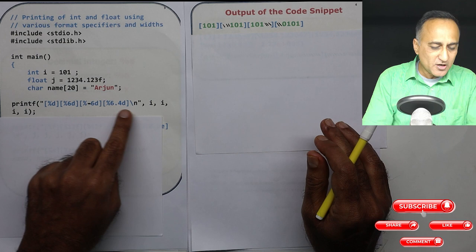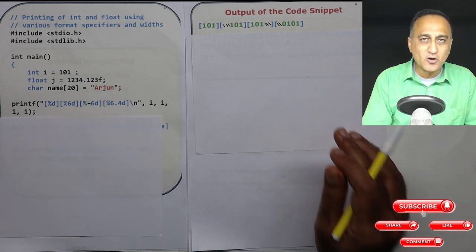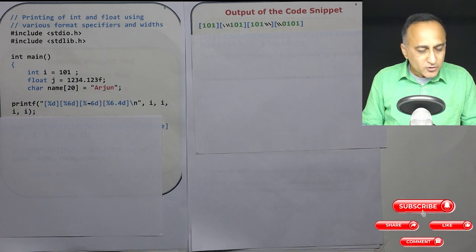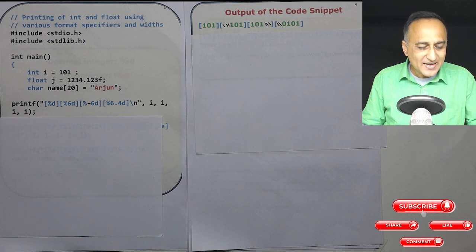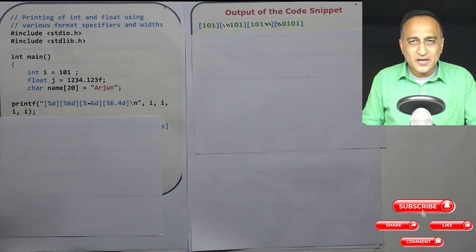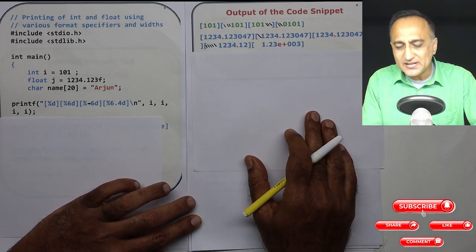So this should give you an idea about how this %d with %6d, %-6d, %6.4d and all work. For this to gain a complete understanding you must type this program and play around with it by changing the width and see how it reacts on the output screen because this is highly conceptual and unless you type in the code and play around with the widths and changing the signs you're not going to get a real world feel of how it is doing because I'm on a static screen.